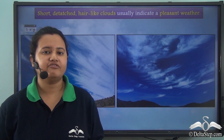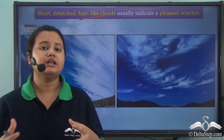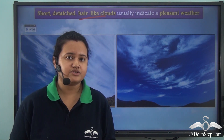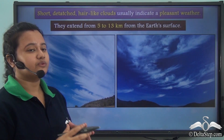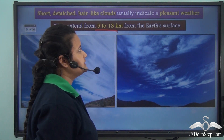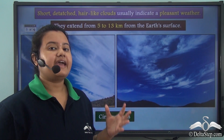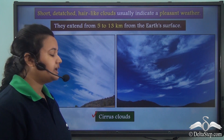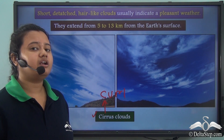Here we have short, detached, hair-like clouds. These clouds appear like magical wisps and they also resemble tufts of hair. These clouds are associated with or indicate pleasant weather. These clouds are located at an altitude — they extend from 5 to 13 km from the earth's surface.